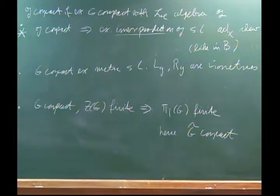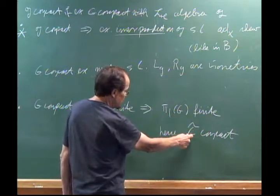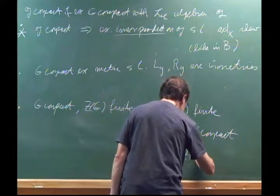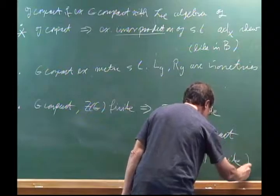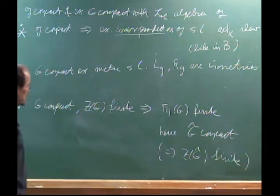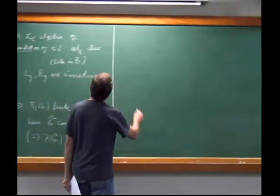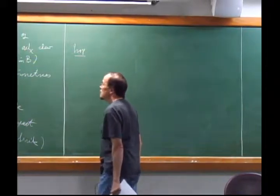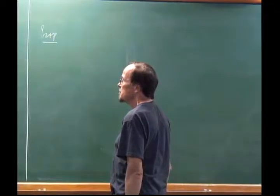Since the universal cover is a finite cover and G has finite center, the universal cover also has finite center. So there are only finitely many Lie groups with that Lie algebra, and they're all compact. These are the things we proved. Let's now derive some consequences.